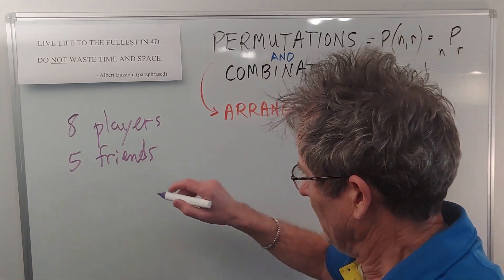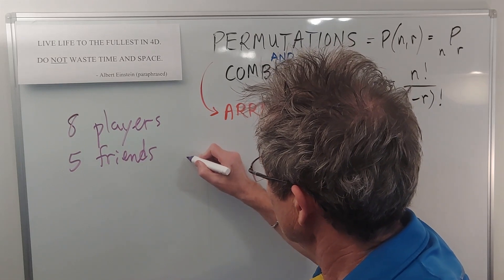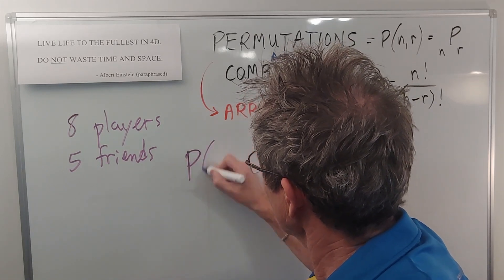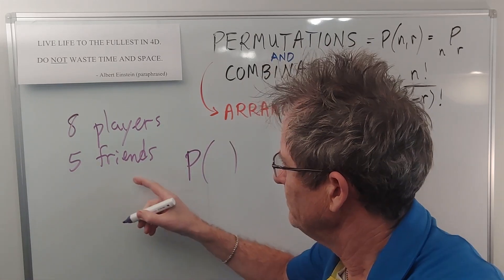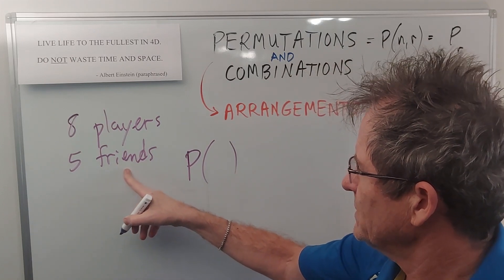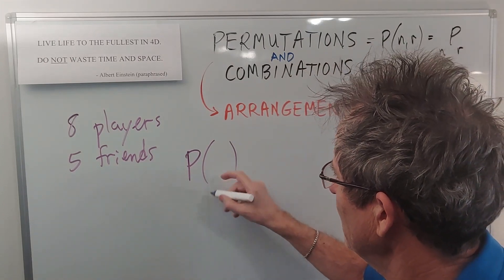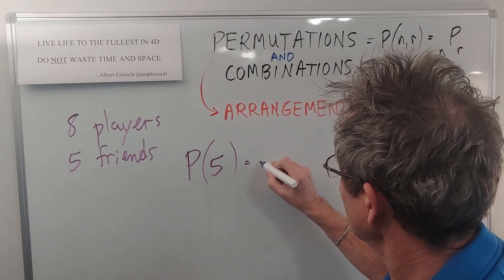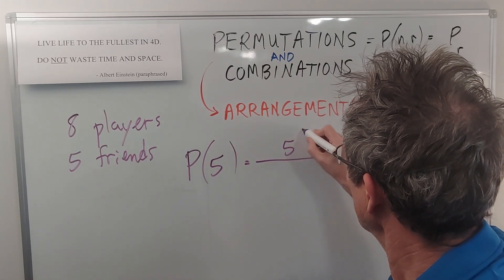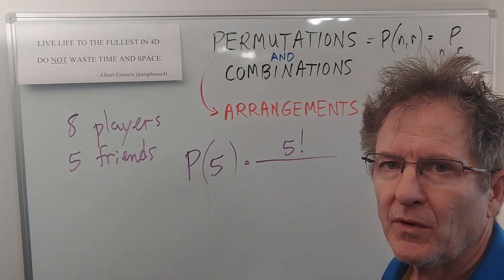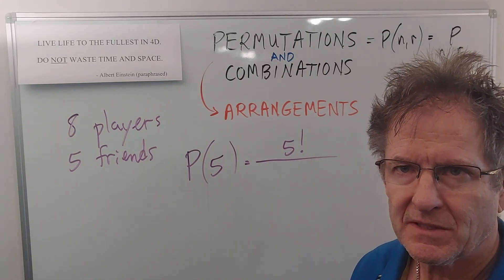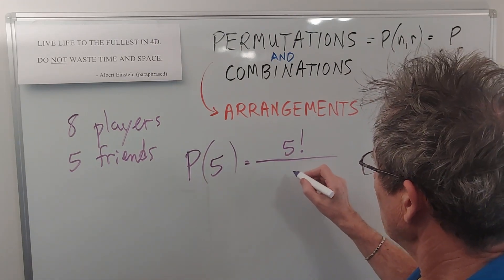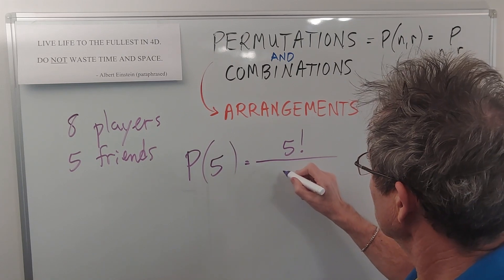So let's say the friends can be any one of the five positions. We have to take that into account. The probability that those five will be on the team together is five factorial - the number of ways those five can be chosen for the five positions - divided by the total number of players, which is...